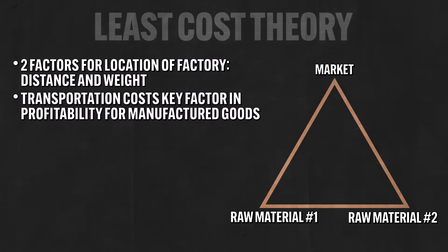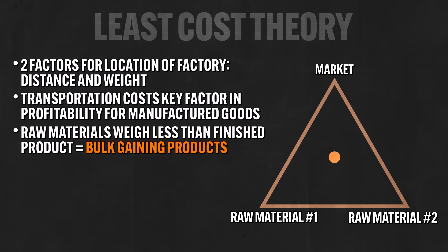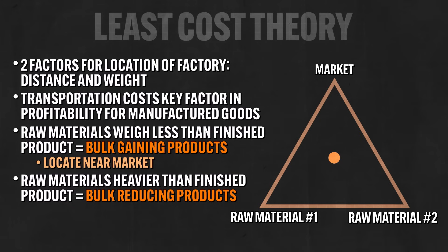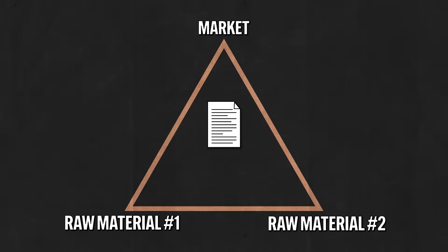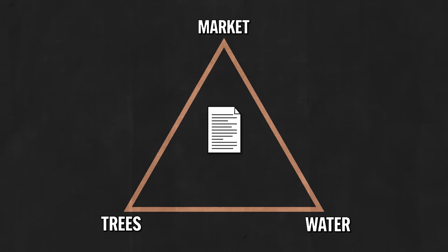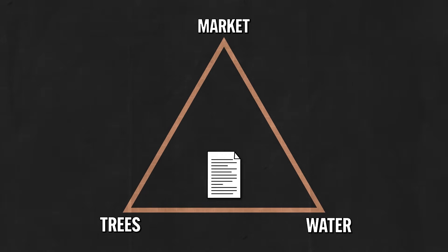Because transportation costs are a key factor in profitability, factory owners had to decide whether to locate near raw materials or the market. If the raw materials weigh less than the finished product — called bulk-gaining products — locating near the market is more cost-effective. But if raw materials are heavier than the finished product — called bulk-reducing products — it's more cost-effective to locate near the raw materials. For example, trees are much heavier than paper, so a paper manufacturer will most reliably locate closer to the raw materials, since it costs far more to transport heavy trees than finished paper.